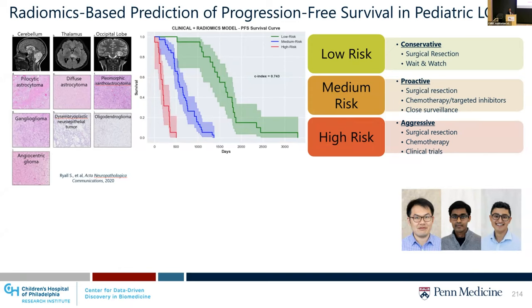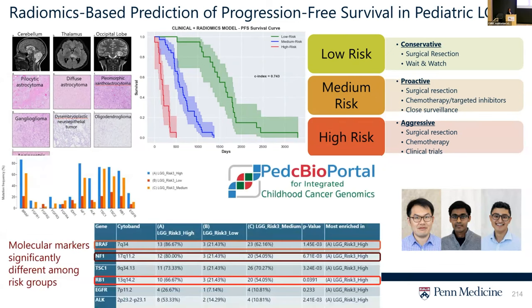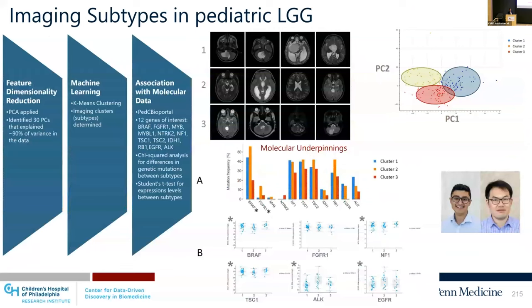We developed and trained machine learning models for prediction of progression-free survival and stratification of patients into different risk groups. We also showed that the predicted risk groups were correlated with underlying genomic markers — for example, mutations in BRAF and NF1 were more predominant in high-risk groups.